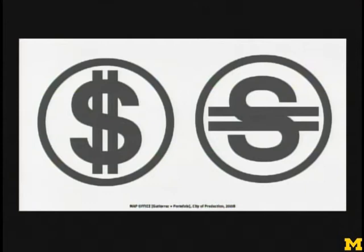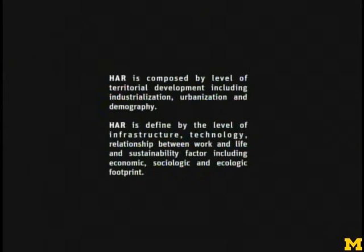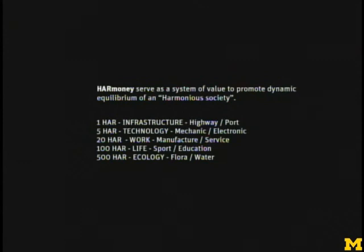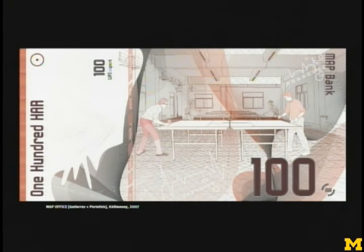For that, we developed an index called the HAR — the Human Accelerated Region — as an index that characterizes the level of development. It's a normal index like measuring pH, where the center represents dynamic equilibrium. To move on the logic of the HAR, we developed the Harmony currency — a system to value and promote dynamic equilibrium as a harmonious society — developing various banknotes called the Harmony, which I'm presenting here quickly to develop a new value for China. Thank you very much.